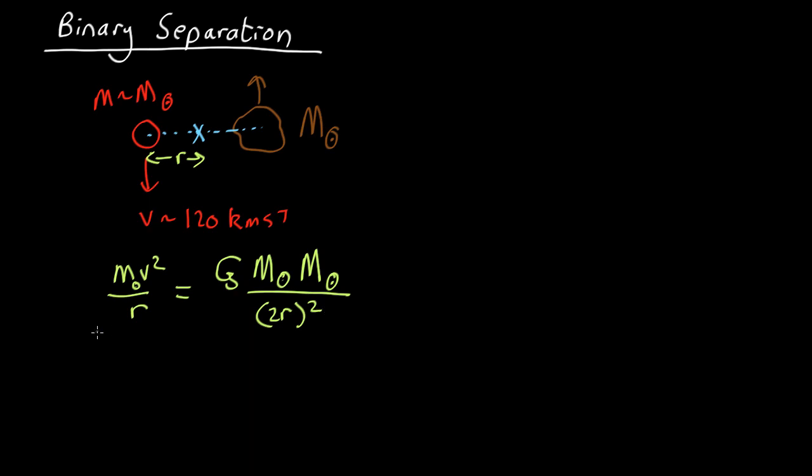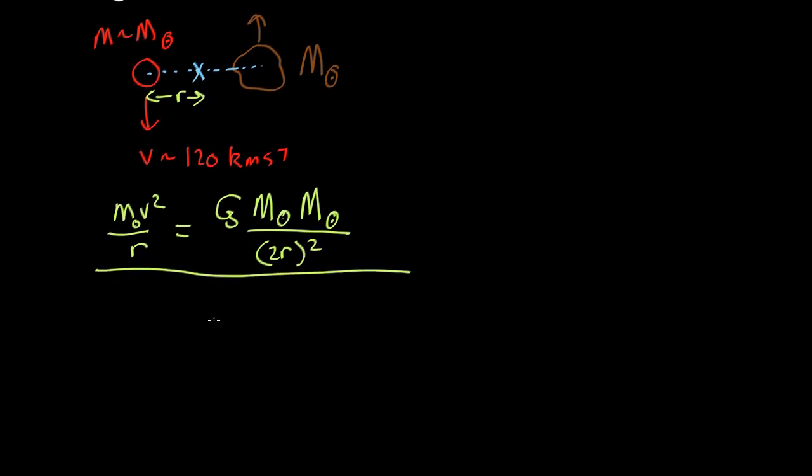So that's balancing centripetal force against gravity. What can we do here? Well we can cancel out one of the masses, we can cancel out one of the r's over there, and we end up with v squared equals G M sun over 4r.